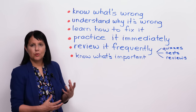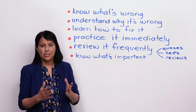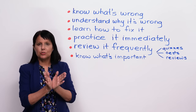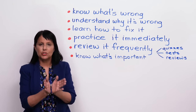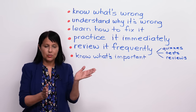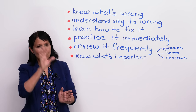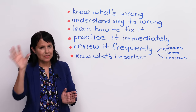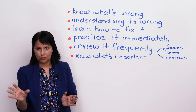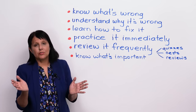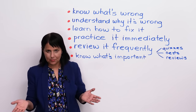So, first, when you're correcting your English, really you can do two things. When you're improving your English, you can do two things: you can learn what's right, or correct what's wrong. Now we're talking about this area where we correct what's wrong. So, in order to correct what's wrong, what do you need to do?